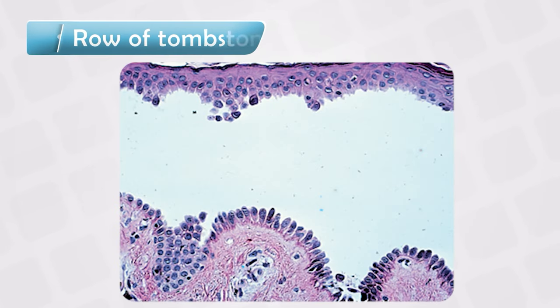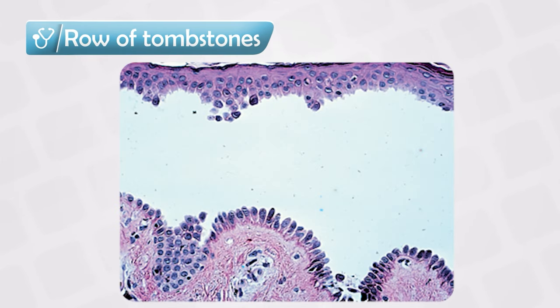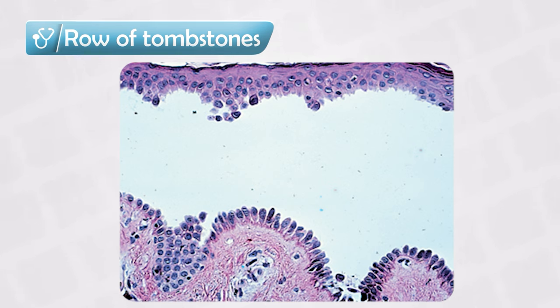If we take a sample or a biopsy of one of these bullae and examine it under the microscope using H&E stain, we will see a structure known as the 'row of tombstones.' This is the result of separation of the keratinocytes.